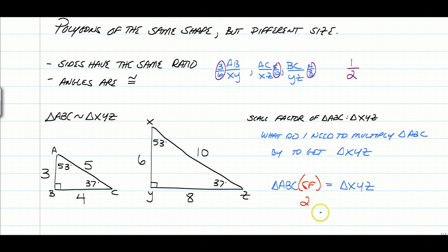So the scale factor is actually 2 to 1. Okay, so you're going to make ABC bigger by a factor of 2 to get triangle XYZ. Okay, so that's basically what similar polygons are.